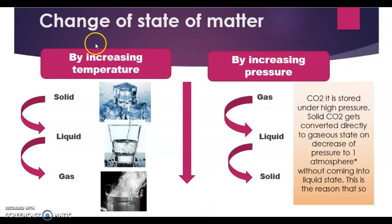Matter can be interconverted between states by changing temperature. When we increase the temperature of a solid, the kinetic energy of its particles increases, causing them to vibrate faster. The heat energy overcomes the force of attraction, particles leave their fixed positions and move freely — the solid melts into liquid. For example, ice converts to water on heating, and if we supply more heat, water starts boiling and converts to vapor (gas).